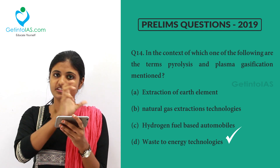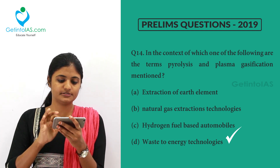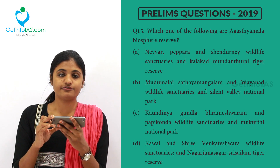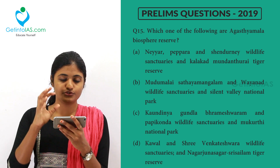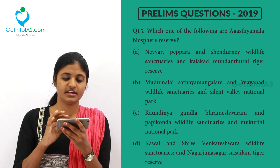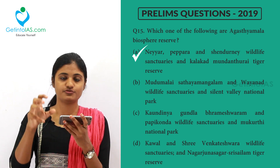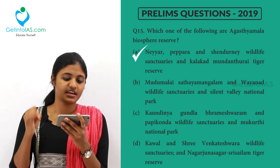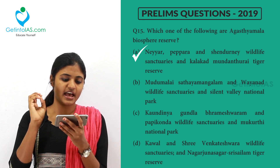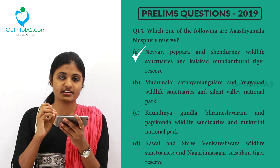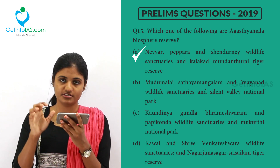Next question: which of the following are in the Agasthyamala Biosphere Reserve? This is one of the 18 biosphere reserves. Option A is correct — Neyyar, Peppara, Shendurney Wildlife Sanctuary, and Kalakad-Mundanthurai Tiger Reserve all come under the area of Agasthyamala Biosphere Reserve.